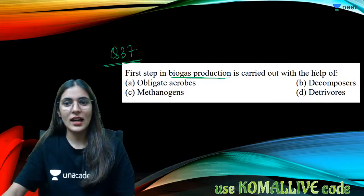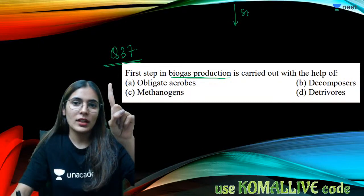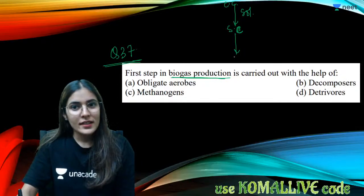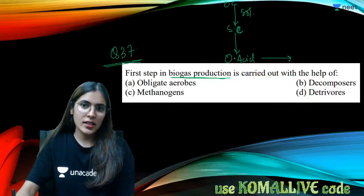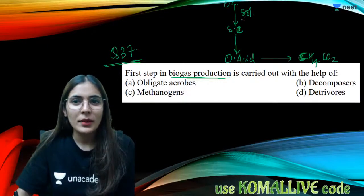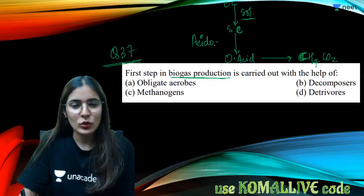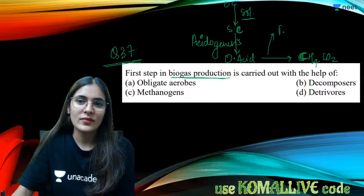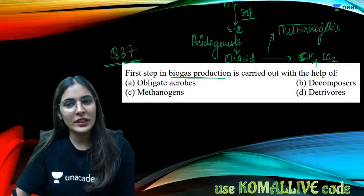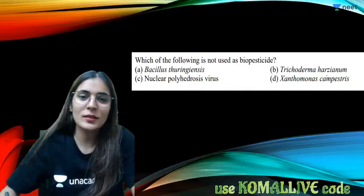Question thirty-seven: the first step in biogas production is solubilization — converting complex compounds to simple compounds. The second step is acidogenesis — forming organic acids. The third step is methanogenesis — producing methane (CH4), carbon dioxide, and other gases. The first step is carried out by decomposers.